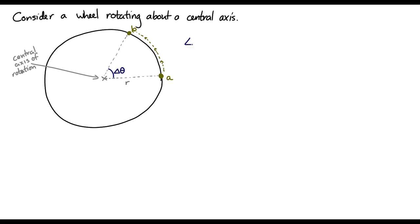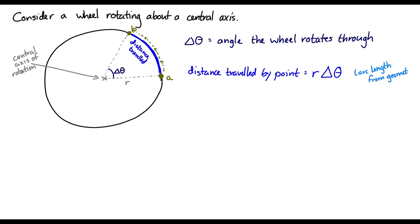The distance that this point on the edge would travel would be r times delta theta. That comes from geometry. That's the arc length equation. The distance traveled should come out in meters.